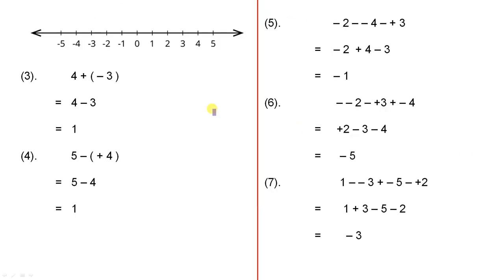I've put the number line here, just for ease of reference. 4 plus minus 3. When the signs are different, that translates to a minus sign, so 4 minus 3 equals 1.